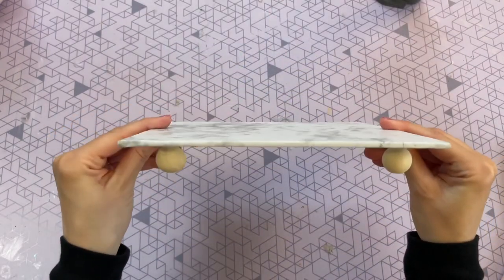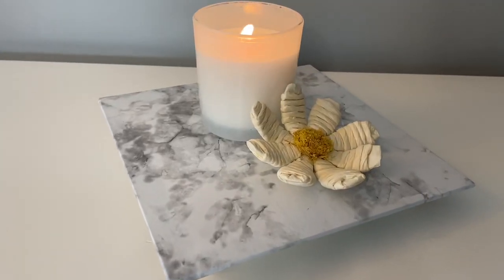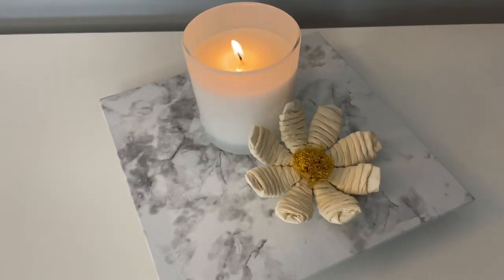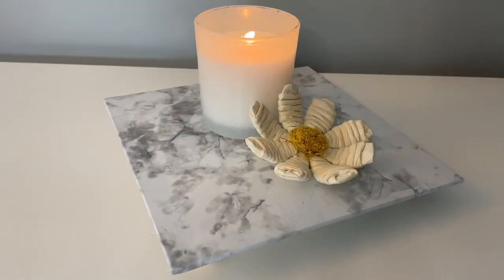This DIY only takes a couple of minutes, but you really can customize it with all of the different contact papers and it makes for a really nice trinket tray or even a little stand for a small plant or candle.